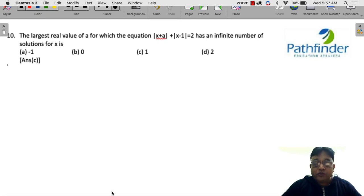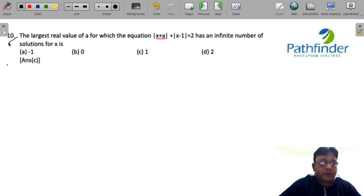CAT 22 Slot 1, Quantitative Aptitude, Question Number 10. The largest real value of a for which |x+a| + |x-1| = 2 has an infinite number of solutions for x.